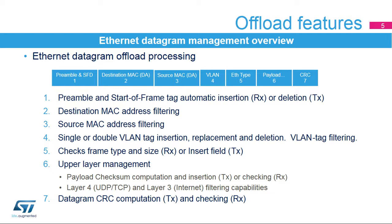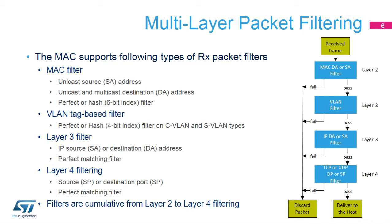The Ethernet MAC peripheral offers filtering capabilities that can be applied to received frames. The different filters are nested. Layer 2 is filtered first with the MAC addresses and VLAN tags. Then the Internet layer filter is applied based on IPv4 or IPv6 addresses. Finally, frames are filtered following the port number of UDP and TCP protocols. Any frame rejected by one of the active filters will be discarded and not delivered to the host. For all layers, perfect or hash filtering is available.